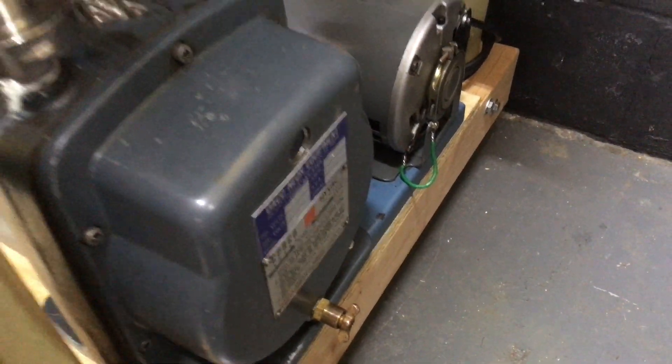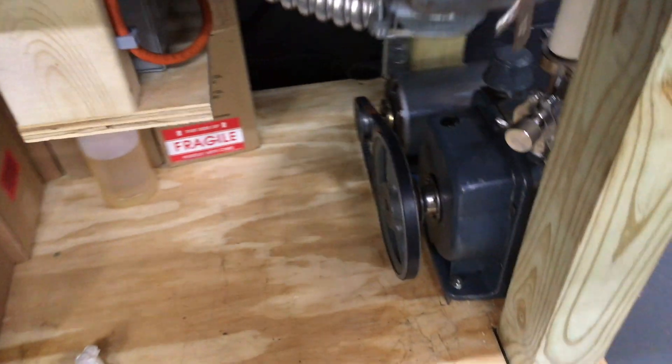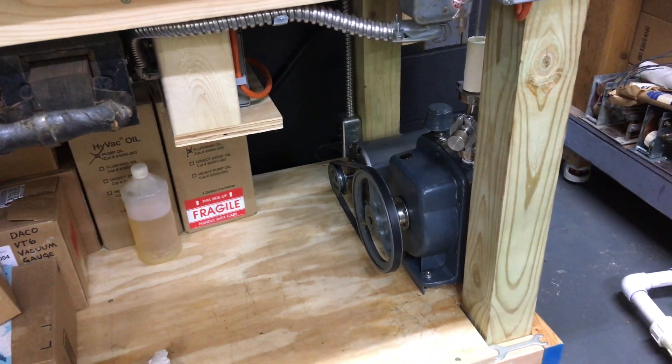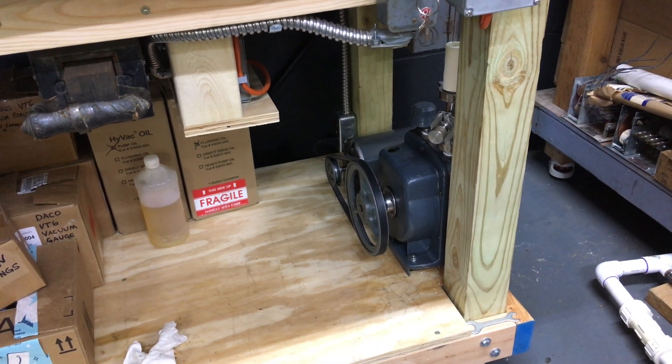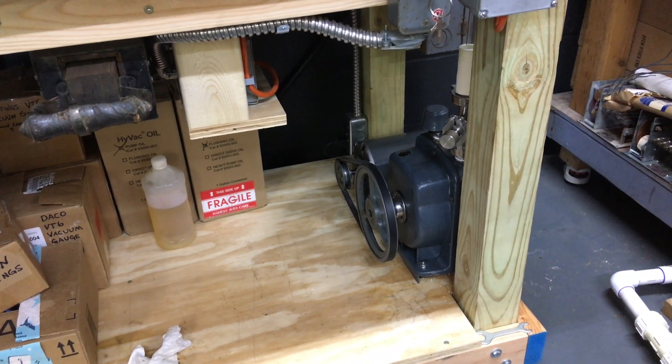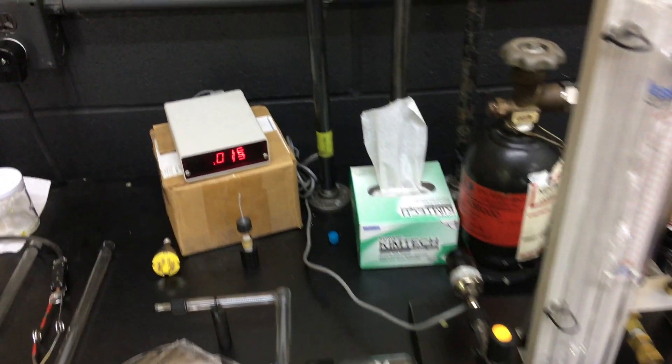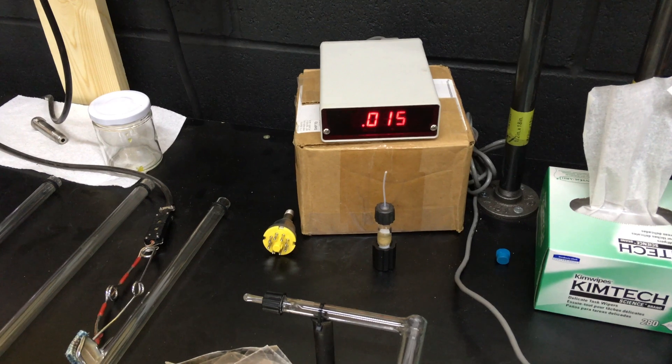This is a Senco HiVac 7, and it is pushing 50 years old. I did a flush, a drain, a flush, a refill before I started, and it gets a decent vacuum when it's cold. It'll pump down to about 3 microns if this gauge is accurate.